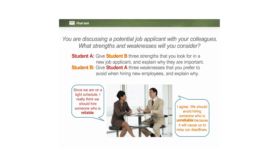Alright, let's move on to our final task for today. You are discussing a potential job applicant with your colleagues. What strengths and weaknesses will you consider? Student A gives Student B three strengths that you look for in a new job applicant and explains why they are important. Student B gives Student A three weaknesses that you prefer to avoid when hiring new employees and explains why. Here's an example: 'Since we are on a tight schedule, I really think we should hire someone who is reliable.' 'I agree — we should avoid hiring somebody who is unreliable because it will cause us to miss our deadlines.' Please put your hand up if you want to take part in this task.